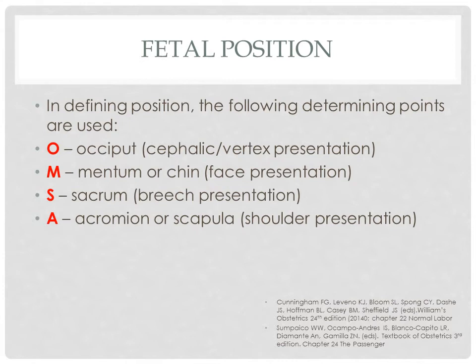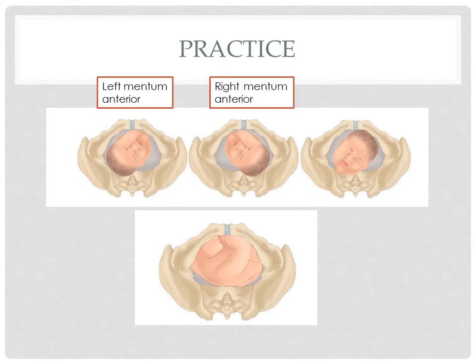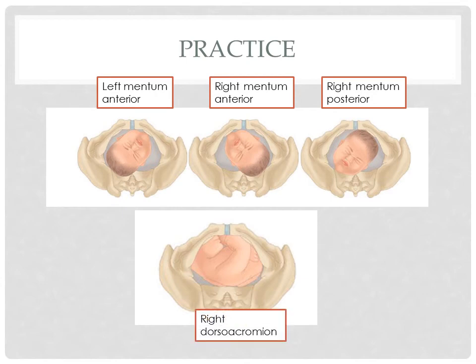Let's do more exercises. The fetus is in face presentation, so our determining or reference point will be the chin or mentum. In the first case, we have left mentum anterior; next, right mentum anterior; then right mentum posterior. In the last case, the fetus is in a transverse lie with the shoulder presenting, so our reference point is the shoulder or acromion — this is right dorsal acromion.